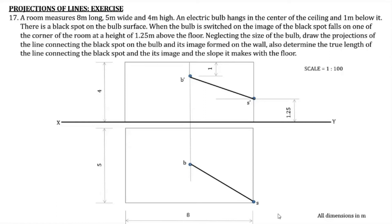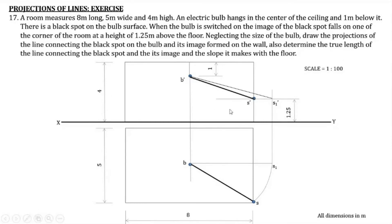Now we need to find the true length and the true inclination with the HP or floor. To get the true length, we rotate the top view so that BS becomes parallel to the XY line, giving point S1. From S1, we project a locus towards S'. The resulting point is S1'. The length B'S1' is the true length. The angle that B'S1' makes with the XY line is theta — the inclination with the floor.